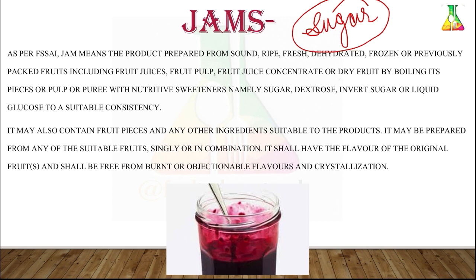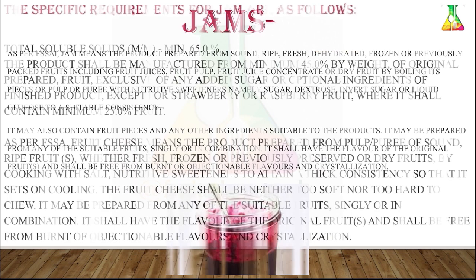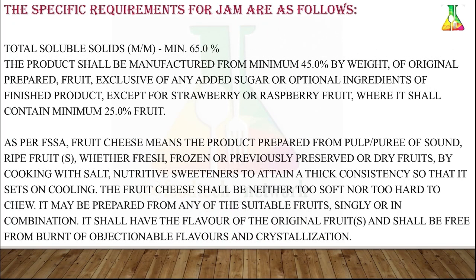Jams consist of 0.5 to 0.6 percent acid. The acids commonly used in jam manufacturing are citric acid and tartaric acid, among others. Invert sugar should not be more than 40 percent, and the total soluble solids — that is, the fruit pulp — should be 65 percent.